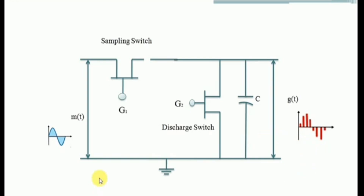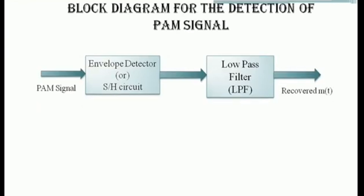These are the circuits involved in generating a natural PAM signal and a flat-top PAM signal. Next, we will discuss the demodulation method of a PAM signal — that is, how we can recover the message signal from a PAM signal. The PAM signal is passed through either an envelope detector or a sample-and-hold circuit, and the output is then passed through a low-pass filter.